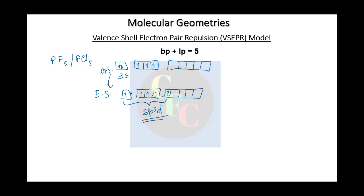With sp3d hybridization, the molecule forms five sigma bonds, giving rise to a trigonal bipyramidal structure — which we have already discussed.